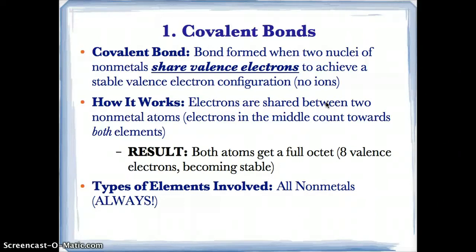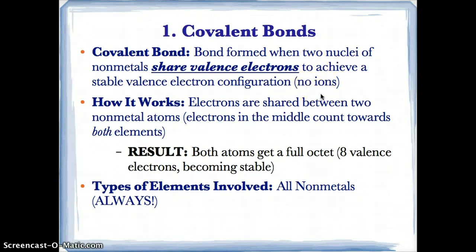Ionic bonds involve a transfer of valence electrons from the metal atom to the nonmetal atoms, so that they both form ions that are attracted to each other. Covalent bonds, on the other hand, only involve sharing. Since sharing means no loss or gain of electrons, the nonmetal atoms stay just as atoms.